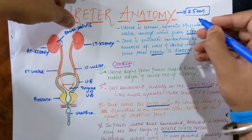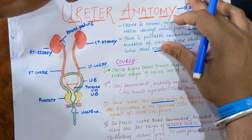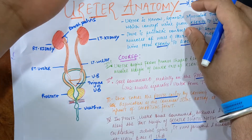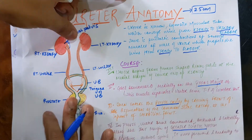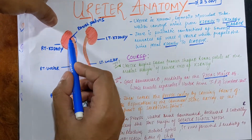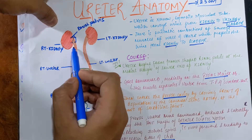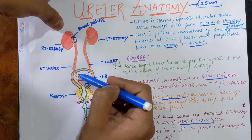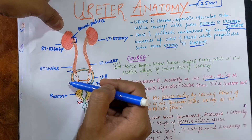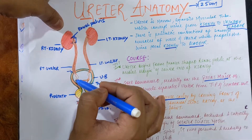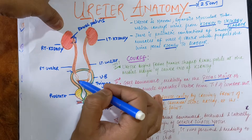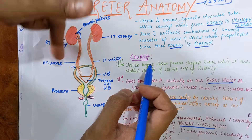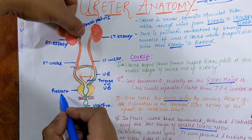The size of the ureter is around 25 centimeters. We have two parts: the abdominal part and the pelvic part. Equally, the abdominal part is 12.5 centimeters and the pelvic part is 12.5 centimeters. In this diagram you can see the right kidney and left kidney, and the renal pelvis area from where the ureter begins, going downwards into the pelvic inlet through the pelvi-ureteric junction, and there is an orifice present in the trigone of the urinary bladder through which urine is released.